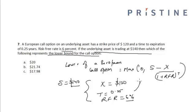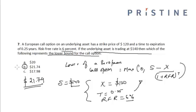If we put these values into this equation, we get the lower bound for a European call option to be $21.74. The correct option is option B, which is $21.74.